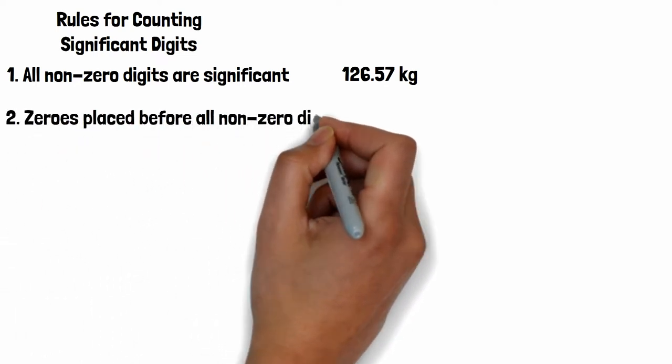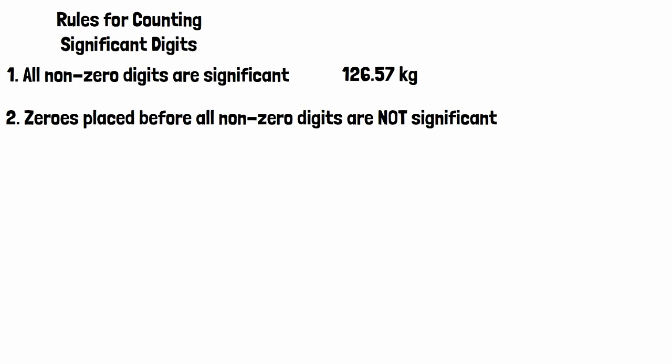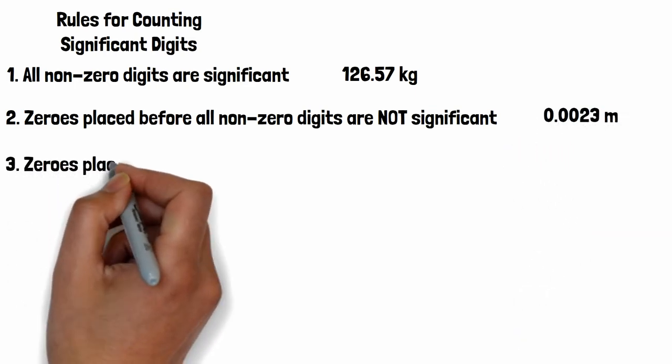Second, zeros placed before all nonzero digits are not significant. So this example will only have two significant digits.